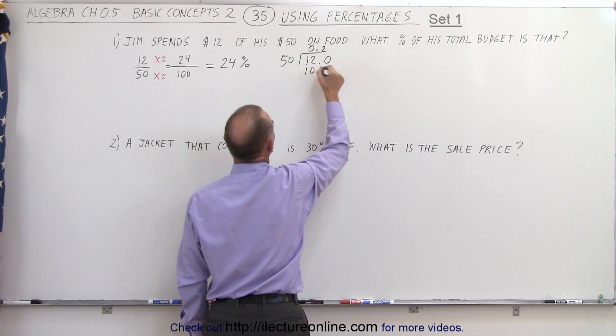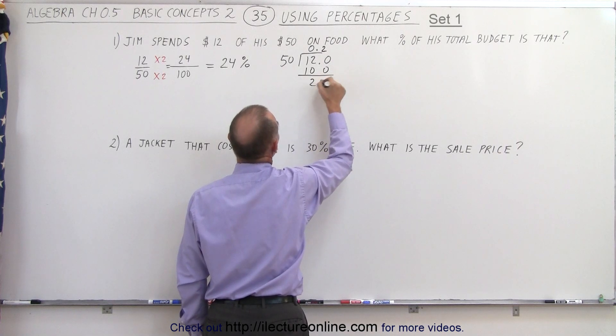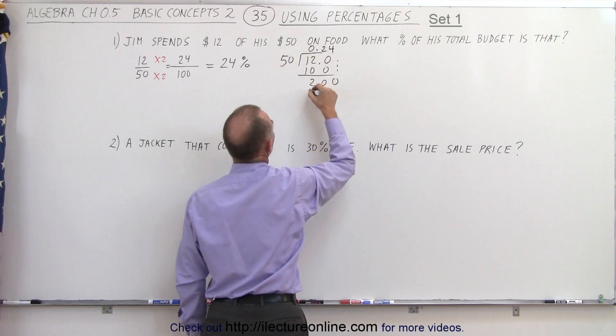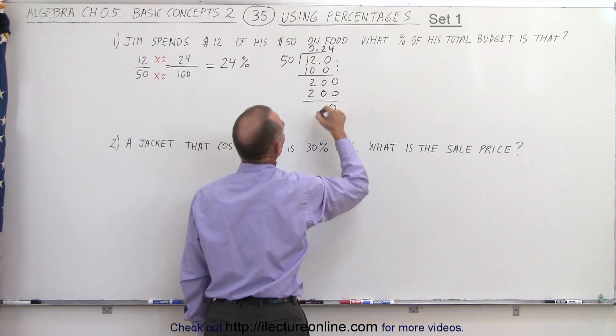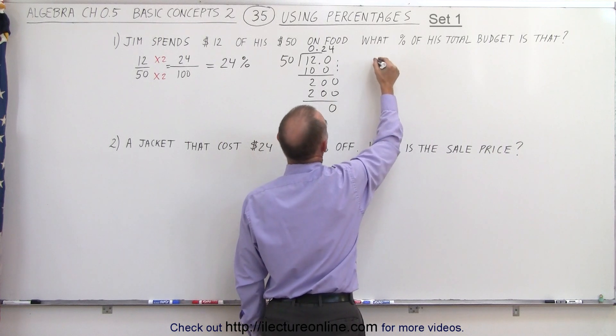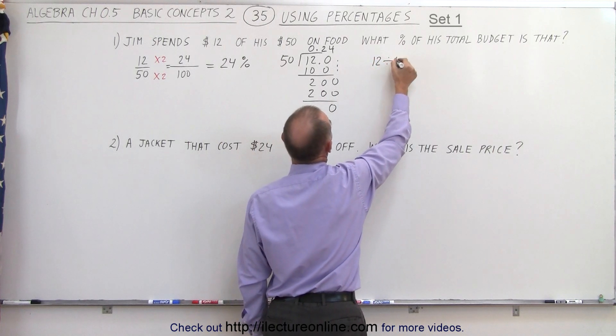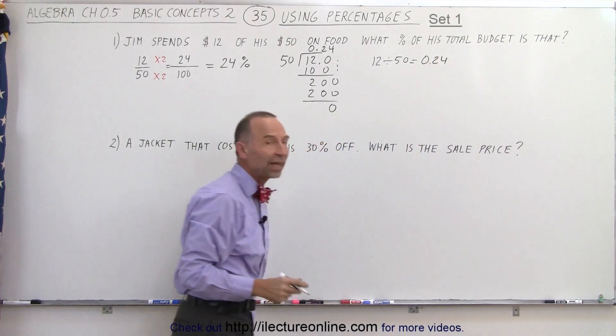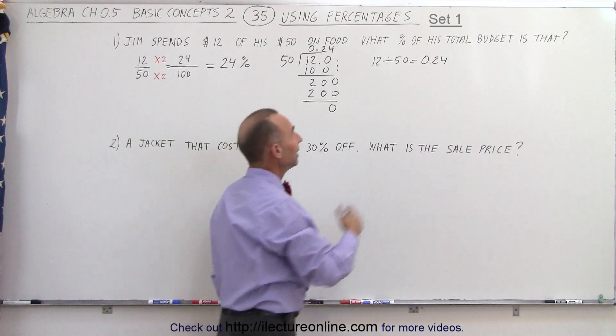50 goes into 120 two times. 2 times 50 is 100, remainder is 20. Drop another zero. 50 goes into 200 four times. 4 times 50 is 200. That gives me zero. In other words, 12 divided by 50 is equal to 0.24.